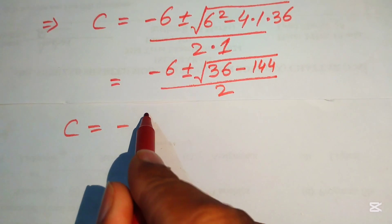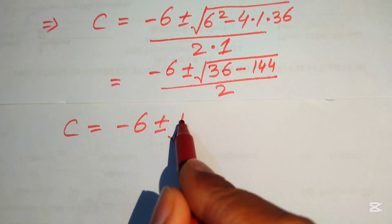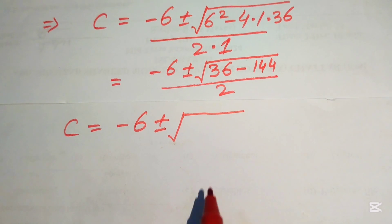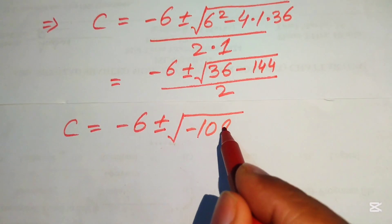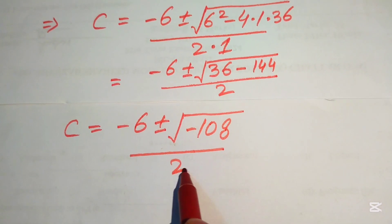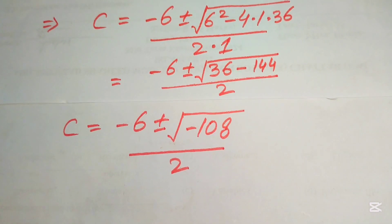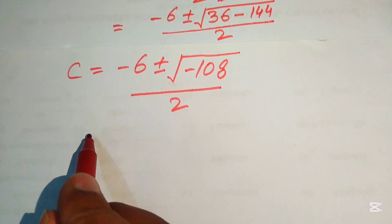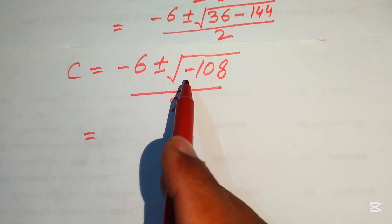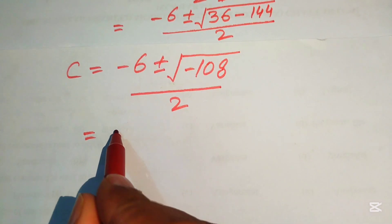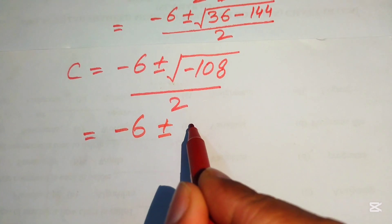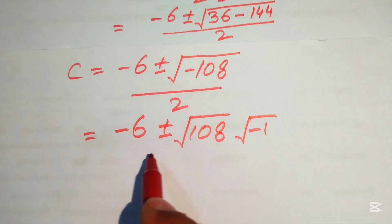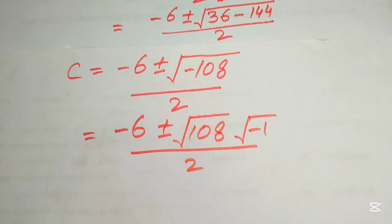We write this as minus 6 plus or minus the square root of (36 minus 144). Since 36 minus 144 equals negative 108, divided by 2. The negative sign inside the square root means we separate it as the square root of 108 times the square root of negative 1, divided by 2.